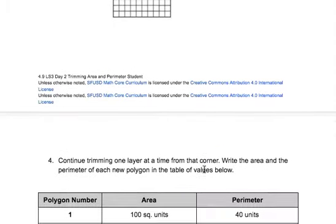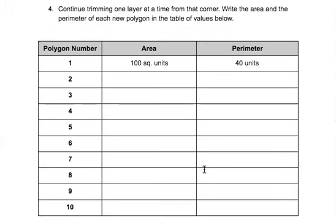You're going to continue doing that for 10 different shapes. So you started with your whole 100 grid and then you slowly took one square unit off, then a 2 by 2, a 3 by 3, and so on until you get 10 different polygons with different areas and perimeters.